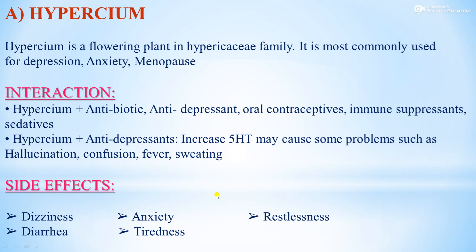When Hypericum is taken with antidepressants, they increase serotonin (5-HT) levels and may cause problems such as hallucination, confusion, fever, and sweating — symptoms associated with serotonin syndrome.